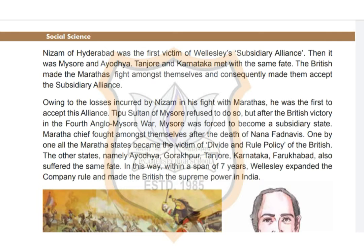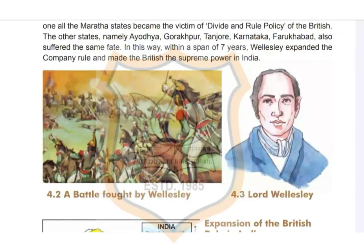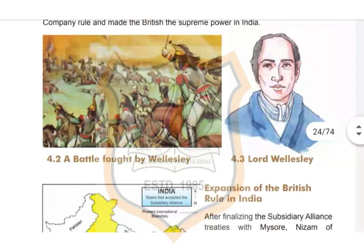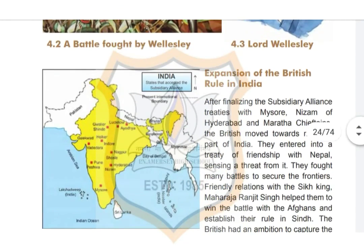The other states — Ayodhya, Gorakhpur, Tanjore, Karnataka, and Farrukhabad — also suffered the same fate. Within a span of just seven years, underline this, Wellesley expanded the Company's rule and made the British the supreme power in India. You can see the picture of Lord Wellesley and a battle fought by him in your textbook.